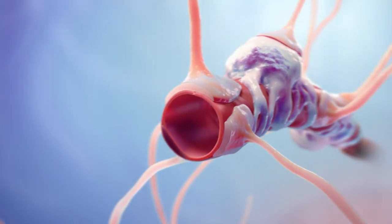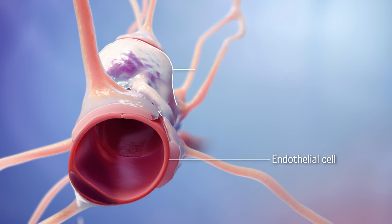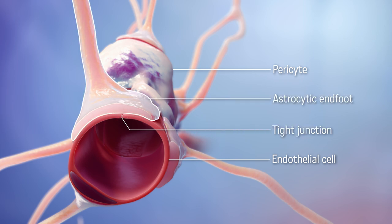The anatomy of the blood-brain barrier includes endothelial cells, pericytes, tight junctions, and astrocytic end-feet attachments.